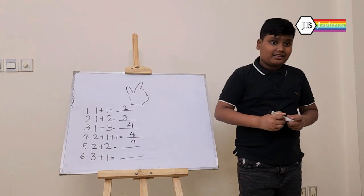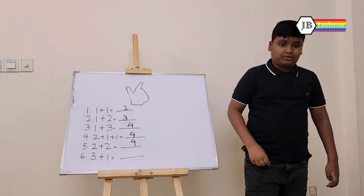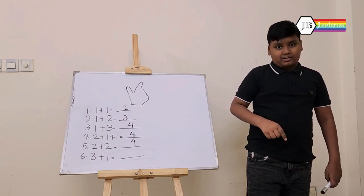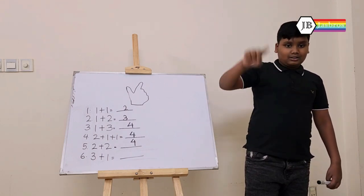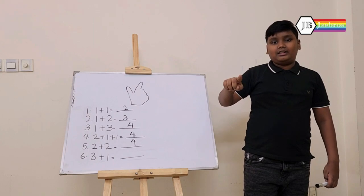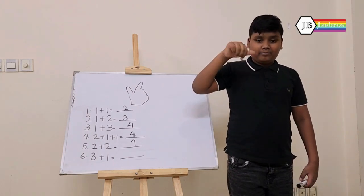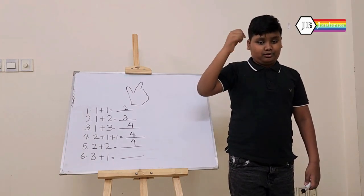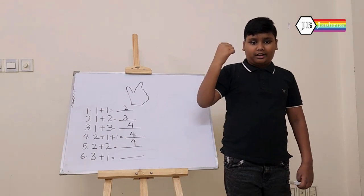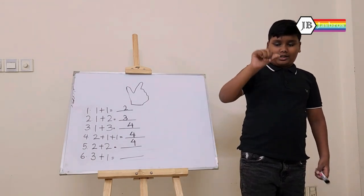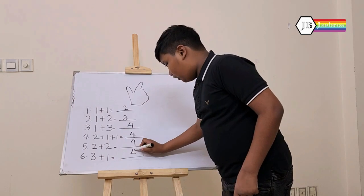And for our last question, it is 3 plus 1. So let's draw our imaginary abacus and add the numbers together. So 3 — 1, 2, 3 — and then we need to add 1. So the answer is 4.